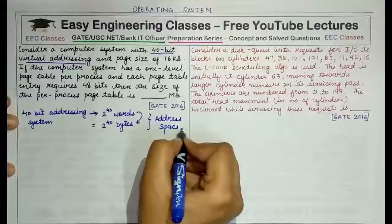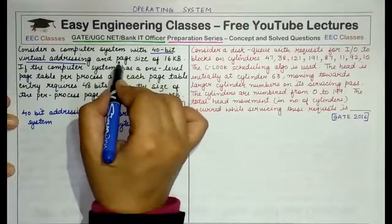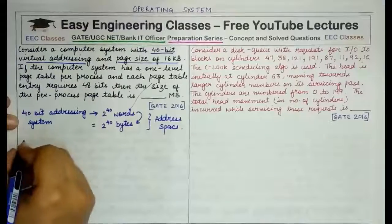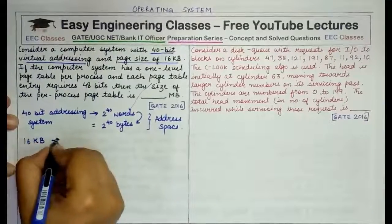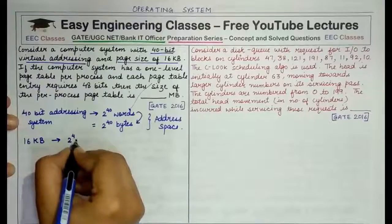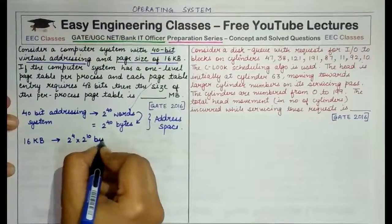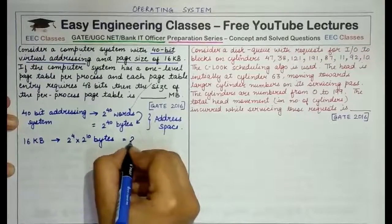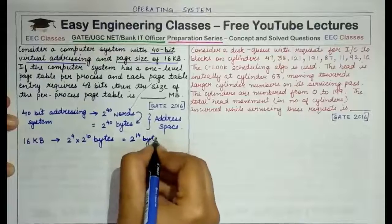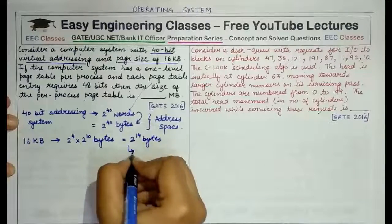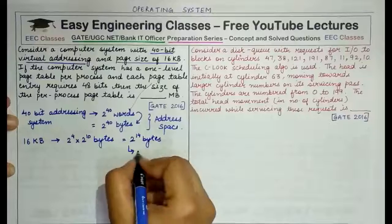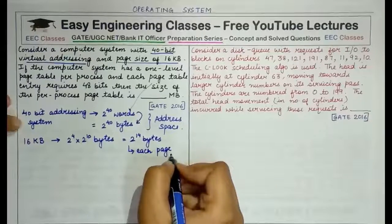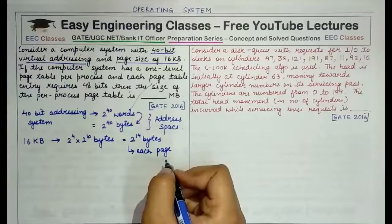So total address space, this is the size of the address space. Now, what information is provided to us about the page size? The page size is of 16 kilobytes. So 16 kilobytes means 2 raised to power 4 into 2 raised to power 10 bytes, which is equal to 2 raised to power 14 bytes. This is the size of each page.